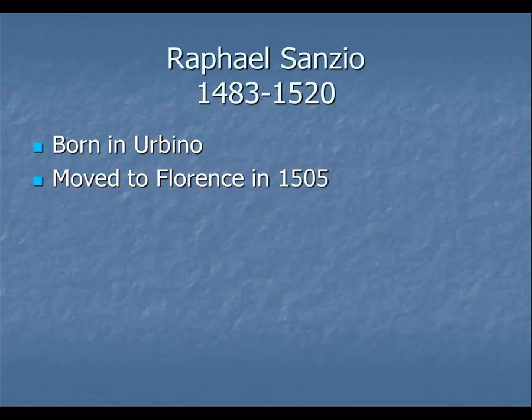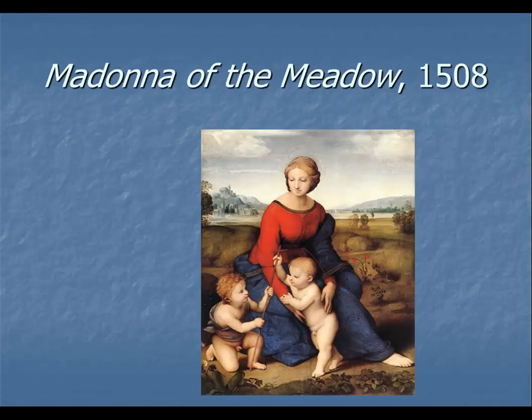Raphael moved to Florence in 1505 and worked there for about three years before the pope brought him to Rome. While in Florence, he painted a great number of what became known as the Madonna paintings, and here he developed a style that would become his trademark. This particular work is called the Madonna of the Meadow, and let's look at what's going on and how it is very Renaissance in its composition.